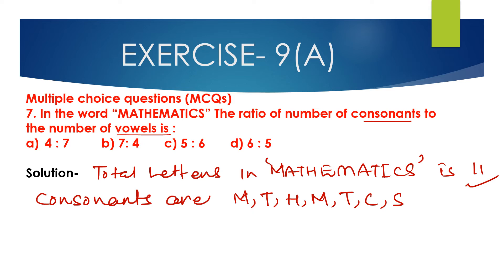Consonants are M, T, H, M, T, C, S. So number of consonants is 1, 2, 3, 4, 5, 6, 7. Number of consonants is 7.